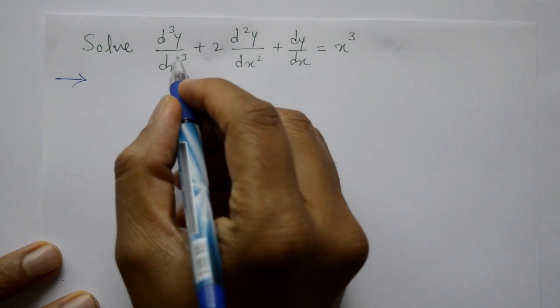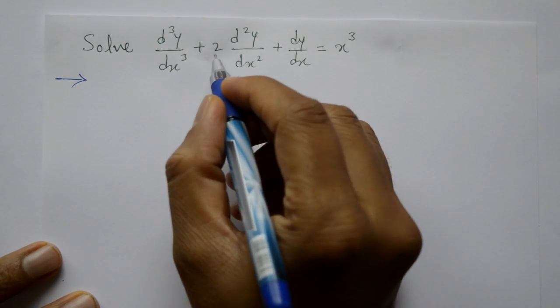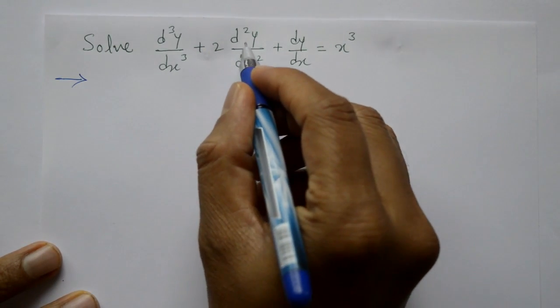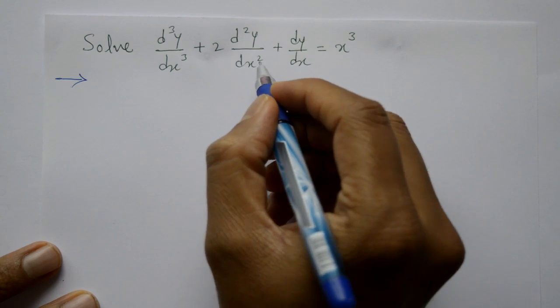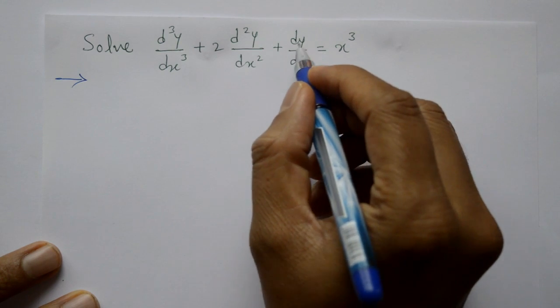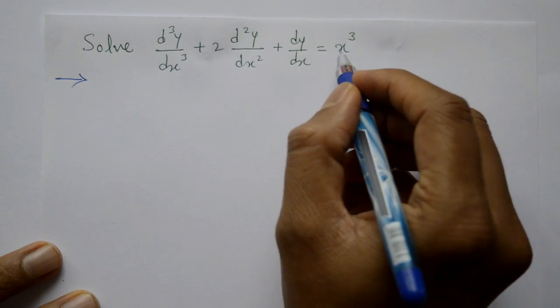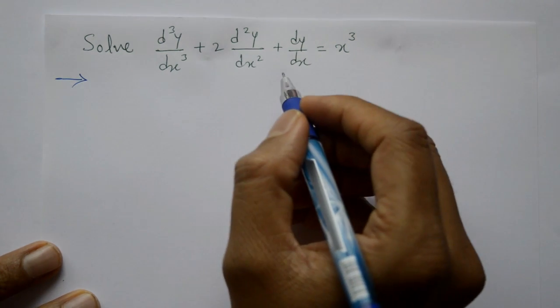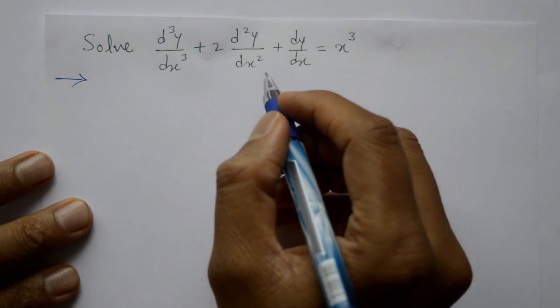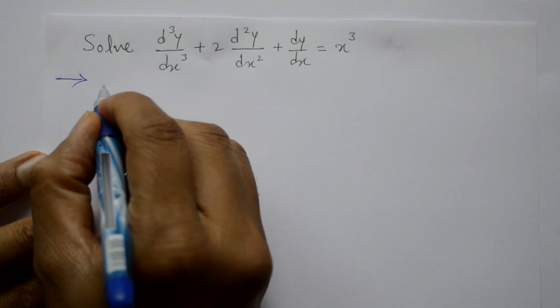Solve d cube y by dx cube plus 2 d square y by dx square plus dy by dx equal to x cube. Find the complete solution.